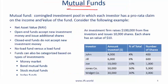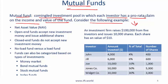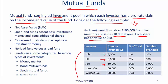A mutual fund is a co-mingled investment pool in which each investor has a pro-rata claim on the income and value of the fund. Co-mingled means the money of different investors is mixed together. For example, a mutual fund company raises $100,000 from five investors and issues 10,000 shares, each with a value of $10. Ownership of the fund is on a pro-rata basis — based on how much each investor contributed — which determines the number of shares they hold.